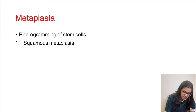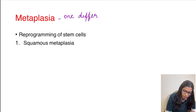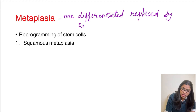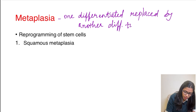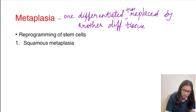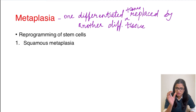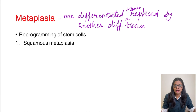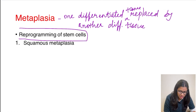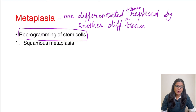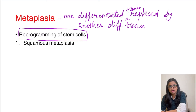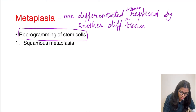Moving on to the next cellular adaptation: metaplasia. Metaplasia is when one differentiated cell type is replaced by another differentiated cell type. It doesn't happen by direct conversion of adult tissue — it actually occurs through the reprogramming of stem cells. The stem cells, which are held in reserve in that organ, undergo reprogramming so that the parent tissue is converted into a different tissue type.